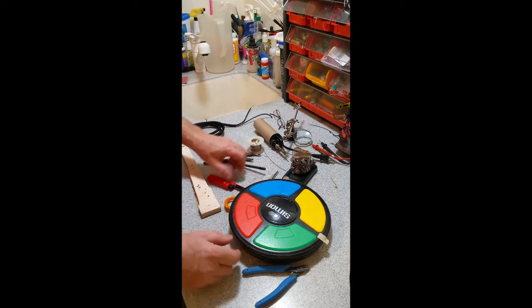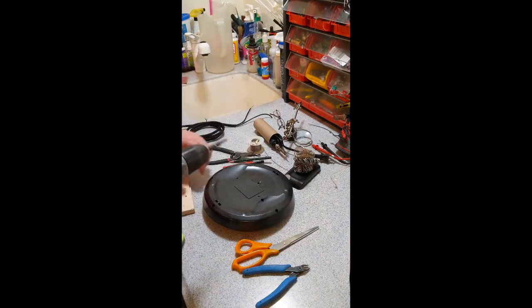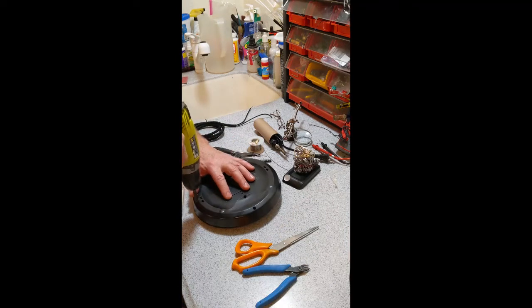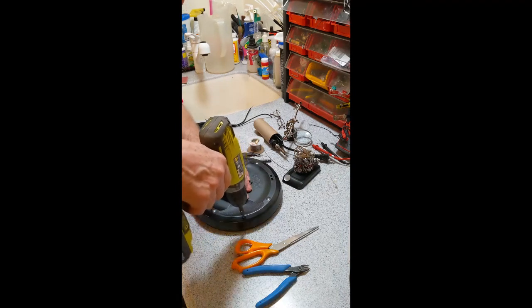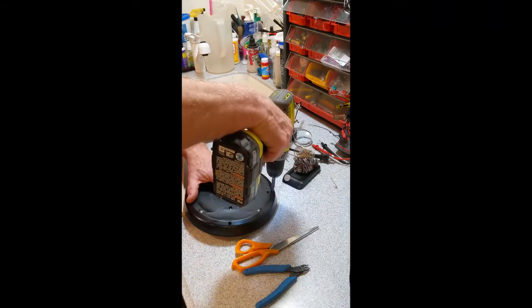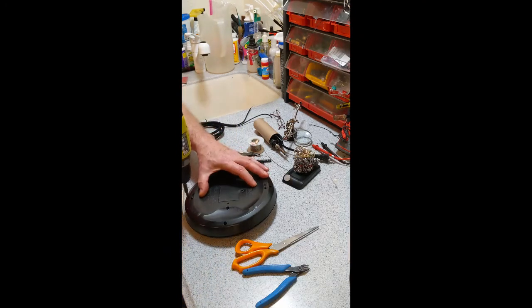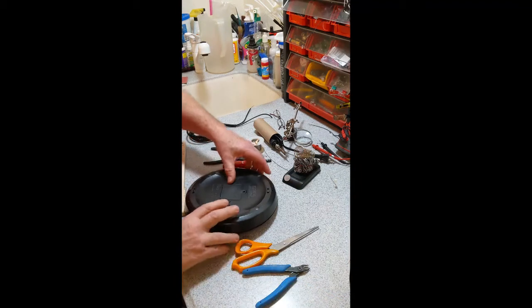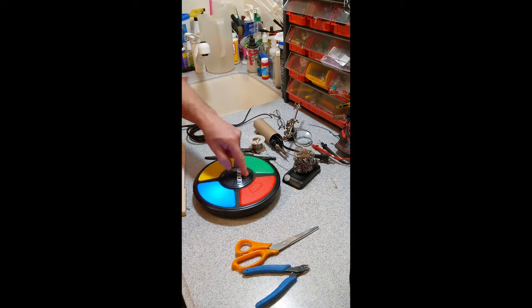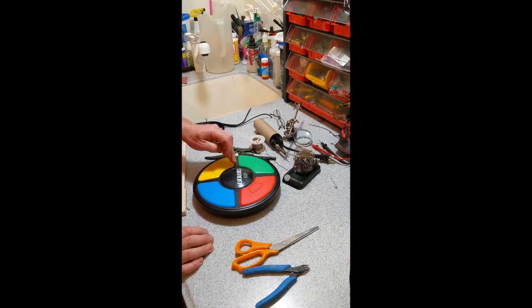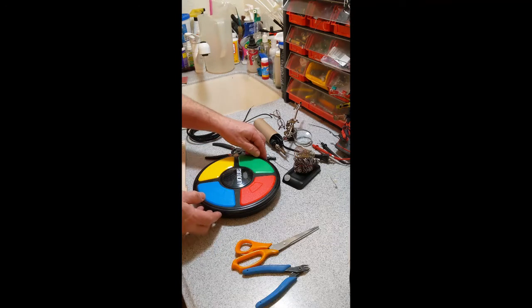Let's open Simon up. Get the cordless drill. There's six screws that hold this back on. This is a brand new Simon out of the box. Turn it over so that they all fall out. This is functioning Simon, fresh from the store. We could play the game, but we're not going to. We're going to take it apart.